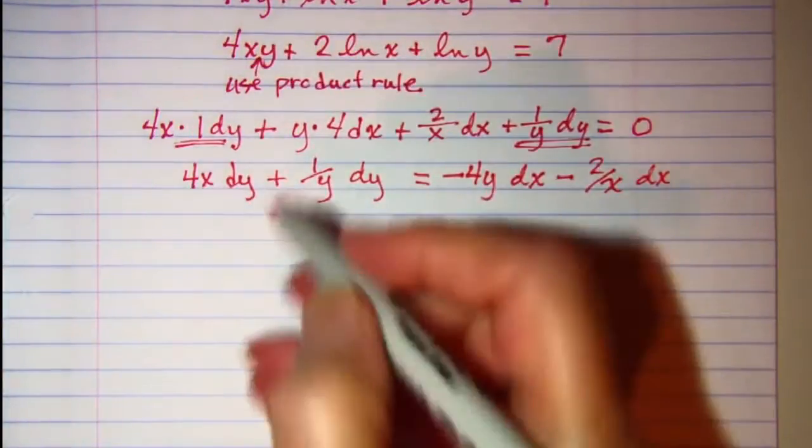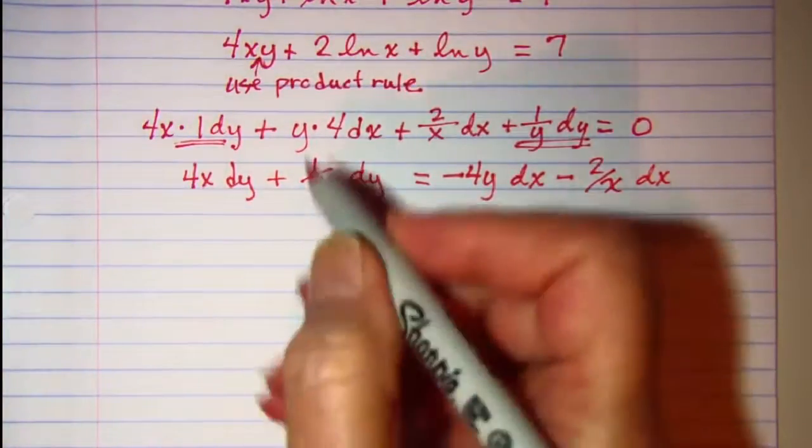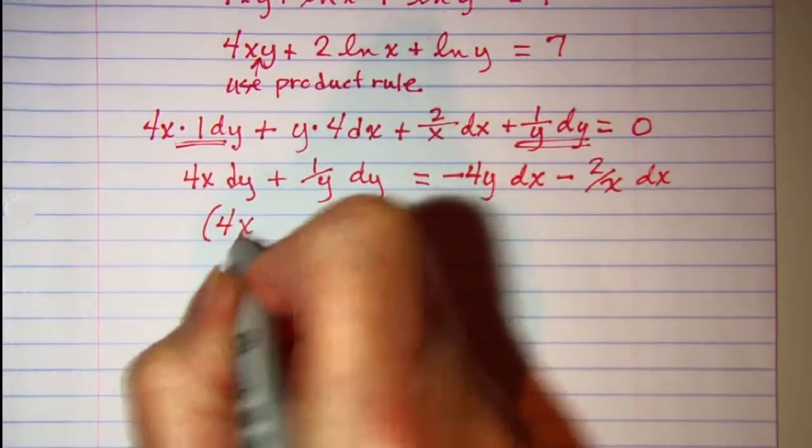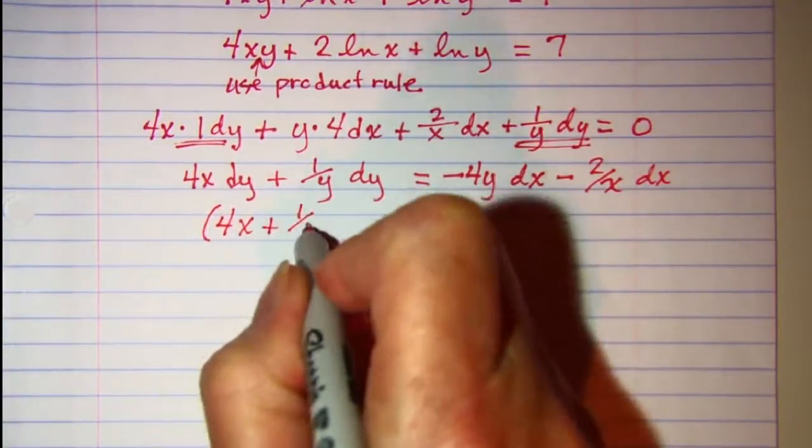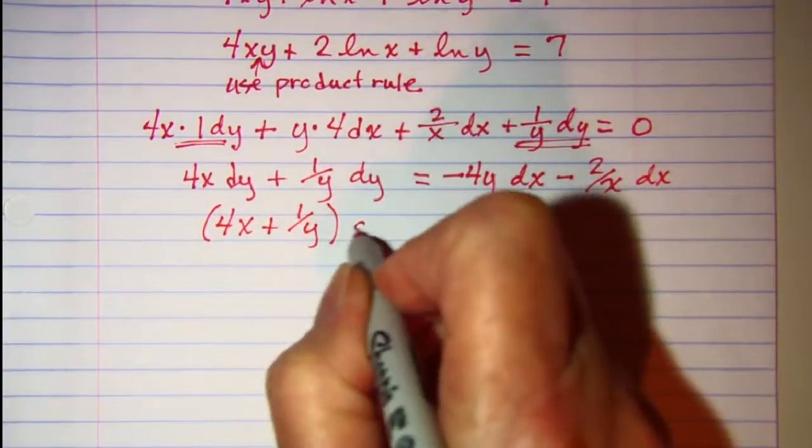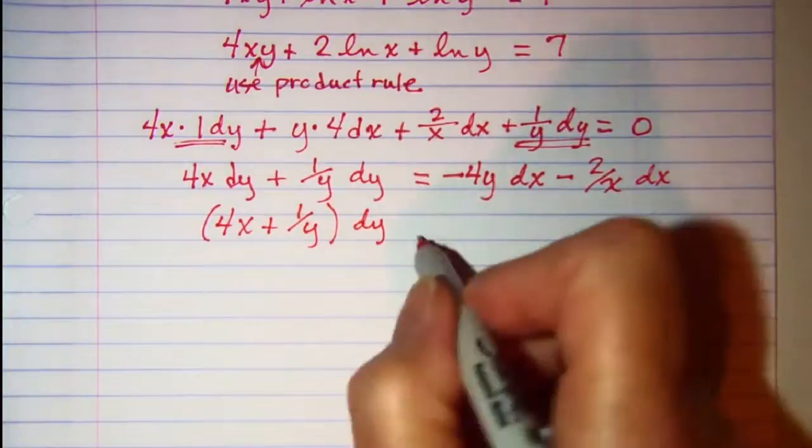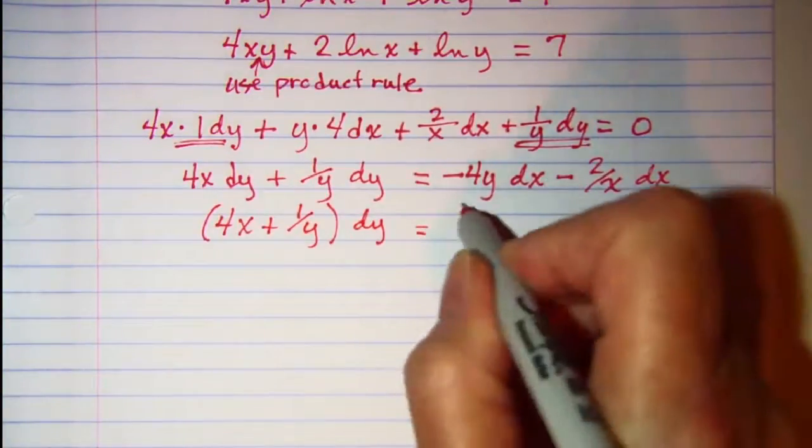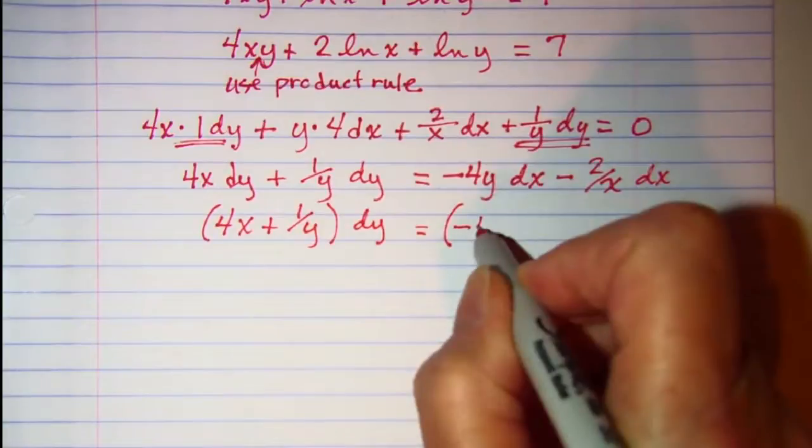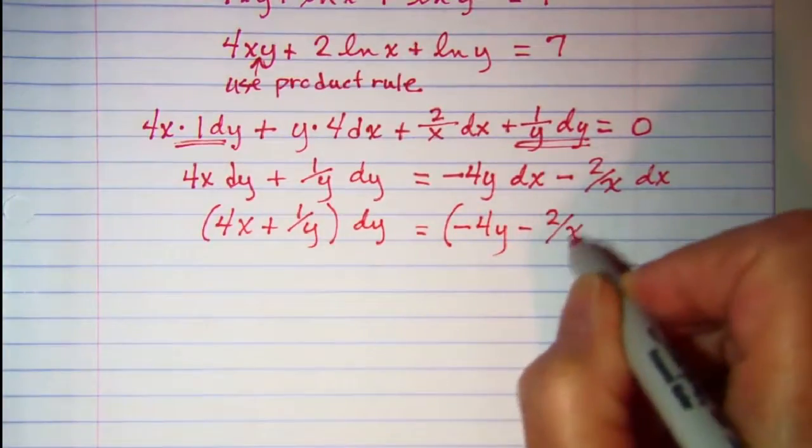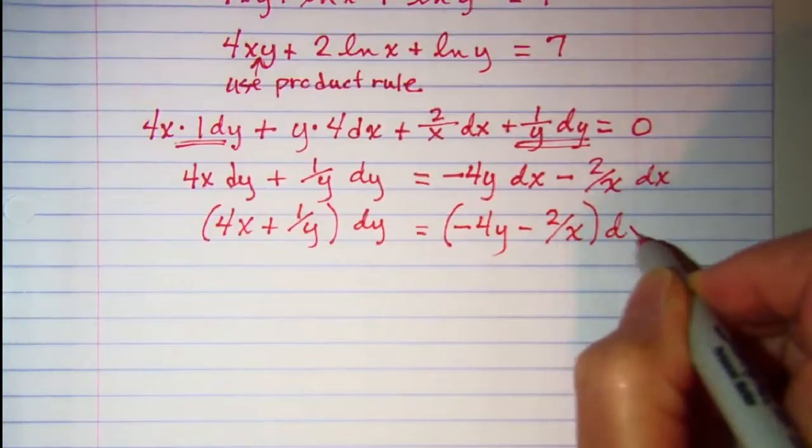Let's factor. So we have 4x plus 1 over y, and that's with dy factored out. And on the right side I have negative 4y minus 2 over x, and then the dx is factored out.